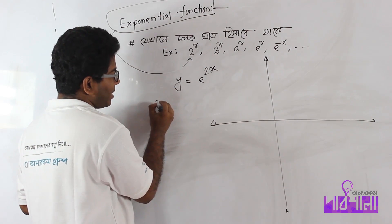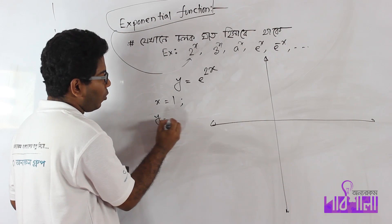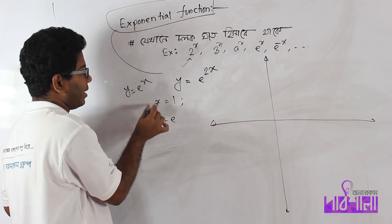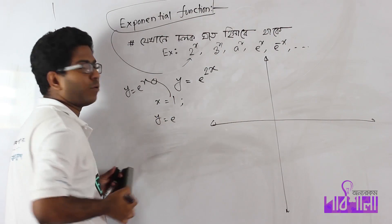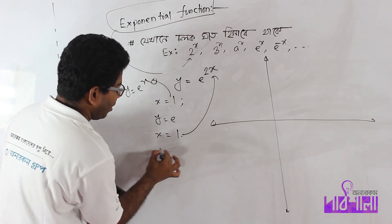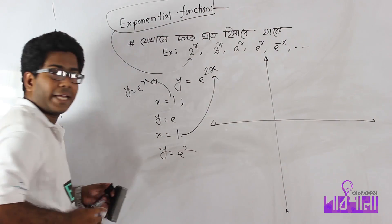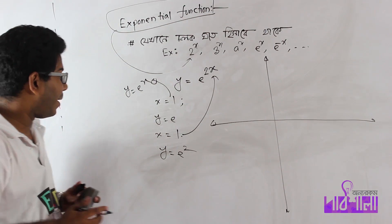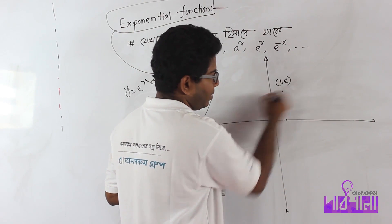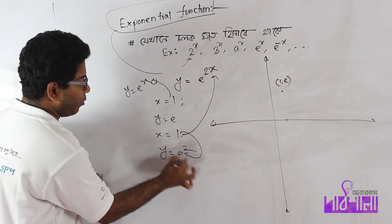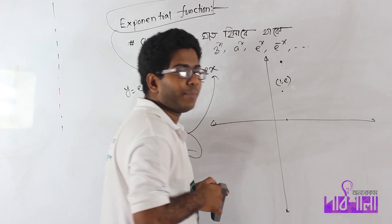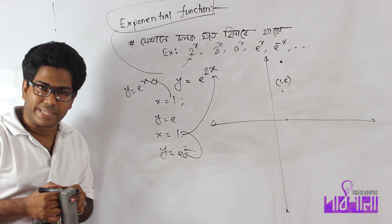When you have x is equal to 1, then y is equal to 2. When y is equal to e to the power x and x is equal to 1, y is equal to e. But now, if you say x is equal to 1, then y is equal to e. When you look at this, the value is equal to e.